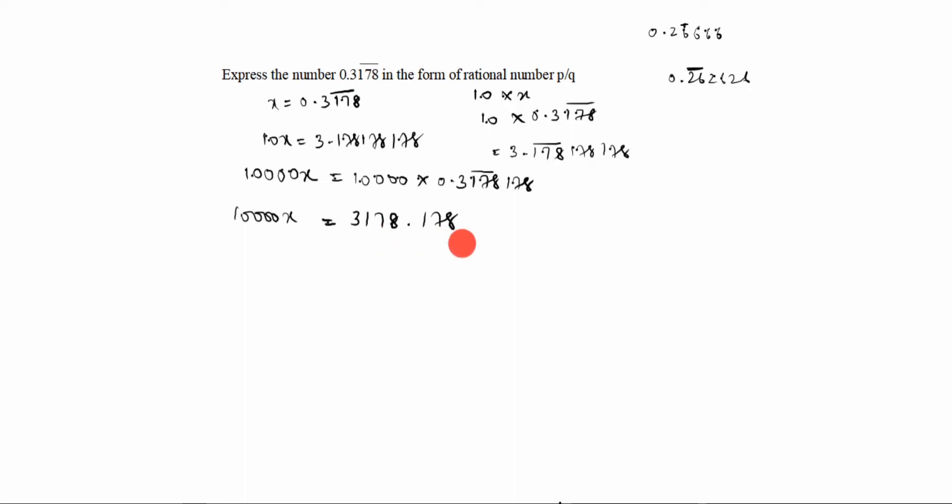Now the answer comes. So what you will do, we have to take 10x, not x. Why? Because the bar should come in the first place, decimal after that the bar comes. If decimal after that the bar won't come, that time what you will do, you have to multiply by 10 or 100, whatever the number you have to multiply. In this case we have multiplied by 10. The answer comes 3.178.